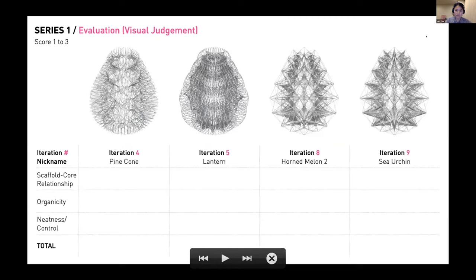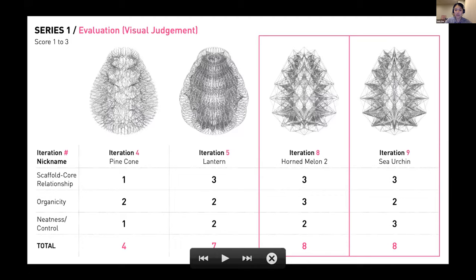I picked four of them to evaluate, and this is their corresponding plans and elevations. For series one, because they are sculptures, I relied on visual judgment to rank them. I ranked them based on scaffold core relationship, where you can see two parts emerging. One is the inner core, and then there's an outer scaffold on each of them. The second criteria was organicity. And thirdly was neatness and control, which was quite important to me because with a lot of plugins, I feel they can do a lot of stuff. Sometimes the computer takes over instead of you. So that was part of my criteria. With those criteria, these were the two iterations that emerged as so-called the best.